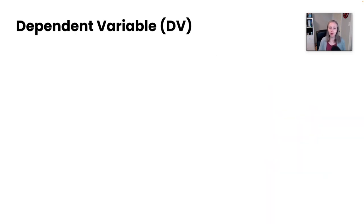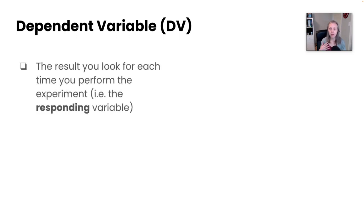The second type of variable we have is the dependent variable. So this is what we're measuring. This is the result that we're looking at each time we perform the experiment. It's the variable that is responding or dependent on the independent variable. And I know the terminology is a little eh, but we'll get the hang of it. Again, there's only one in an experiment because we do need to be able to measure what the response is. We need to control for everything else outside of that.